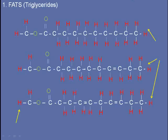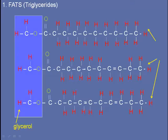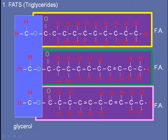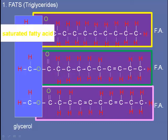We'll look at fats first. Here's an example of a fat, also known as a triglyceride. Fats are made up of glycerol and three fatty acids. You'll see from this graphic that not all the fatty acids are the same. You should have noticed that the first one, which we call a saturated fatty acid, has no double bonds between carbons — it holds the maximum amount of hydrogen.